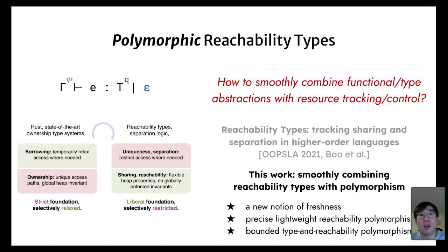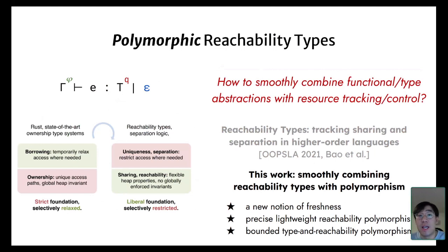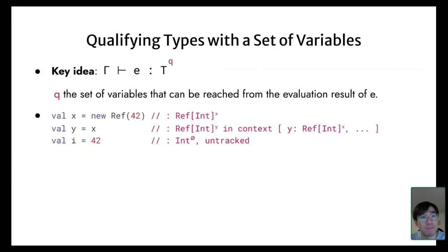In this work, we build on top of reachability types and further address the issue of how to smoothly combine reachability types with polymorphism. Specifically, we propose a new notion of freshness, and our new design offers both lightweight and quantified reachability polymorphism. Let's look at these ideas with some examples.